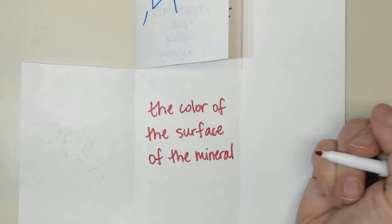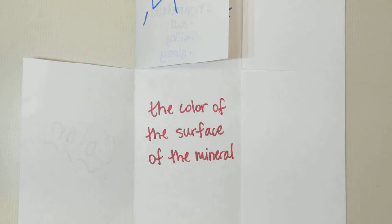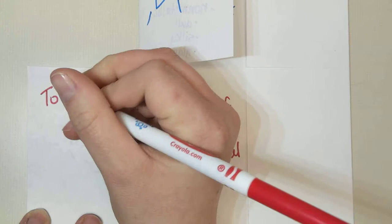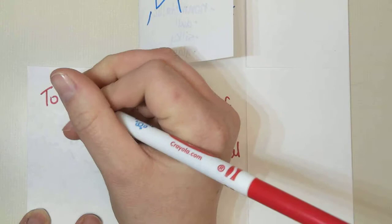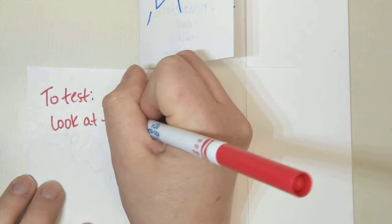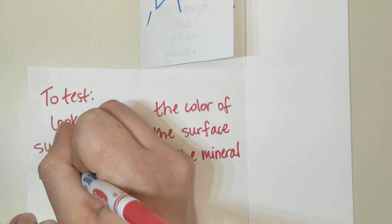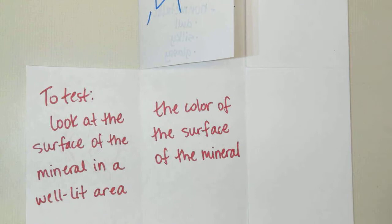Now, unfortunately, color is not the best indicator, the best physical property for identification. We'll talk in a minute about one that's even better, because sometimes different minerals can share the same color. Or one mineral, for example, quartz that we looked at yesterday, can have a variation of colors. So testing the color is pretty simple. On the left side, we're going to say 'to test', similar to luster. Look at the surface of the mineral in a well-lit area. Again, we don't want to be looking at it in the dark, because colors can appear differently depending on the amount of light.